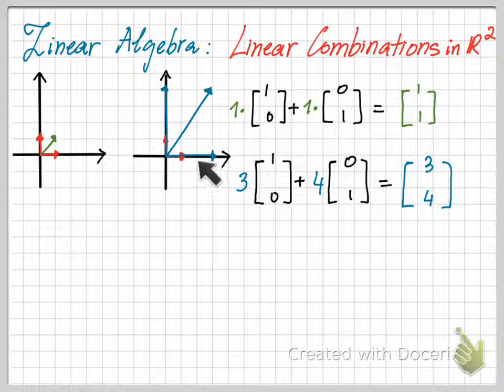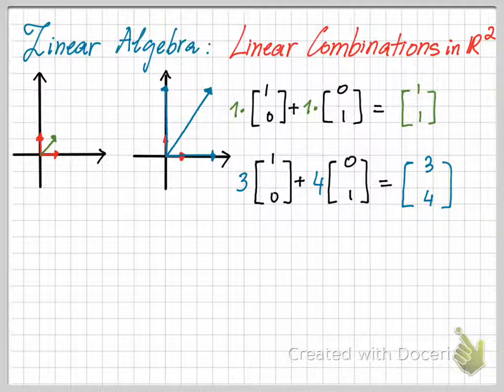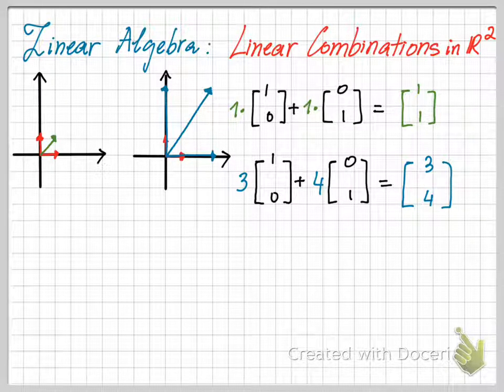This blue vector is 3 times the unit vector, and this blue vector is 4 times the other unit vector. So the vectors [1,1] and [3,4] are the sum of these two unit vectors after scaling. You can see that these new vectors are just vectors in the same space, R².